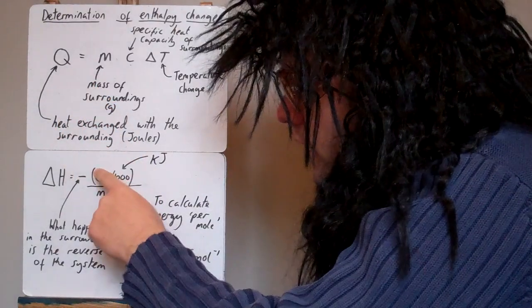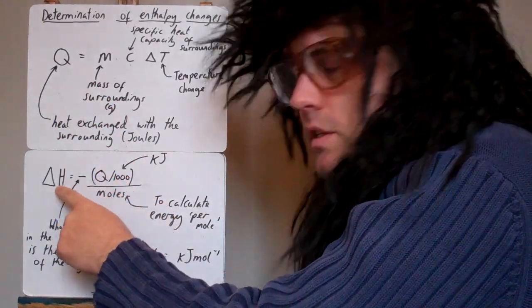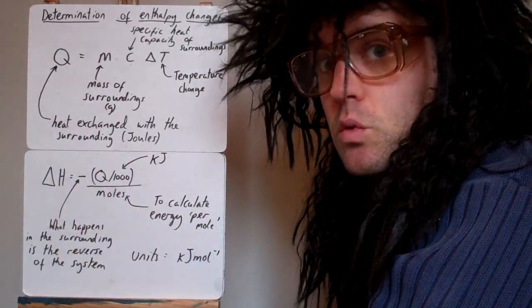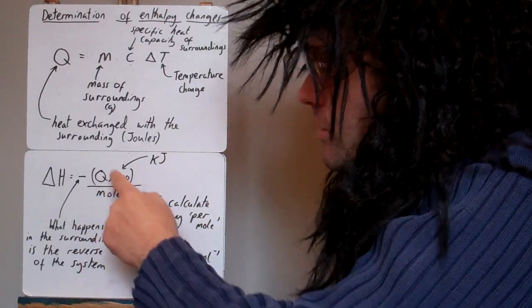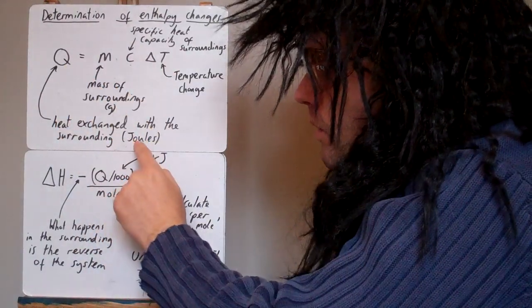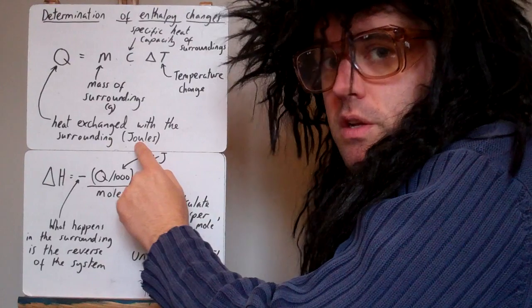Q, we work it out here, we divide by 1000, because delta H enthalpy changes are normally given in kilojoules per mole. So divide Q by 1000, because Q in this equation, when you calculate it, you get the answer in joules.